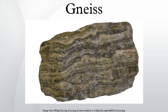Gneissic banding: Gneiss appears to be striped in bands, called gneissic banding. The banding is developed under high temperature and pressure conditions. The minerals are arranged into layers which appear to be bands when the rock is broken and viewed from the side.